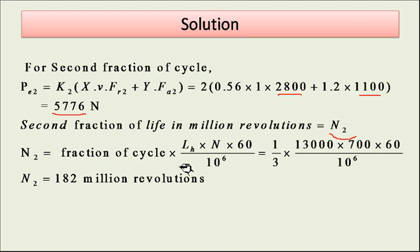N2 equals fraction of cycle × Lh × N × 60 / 10^6. It will be giving me 182 million revolutions by putting the value of Lh and N, 700 here.